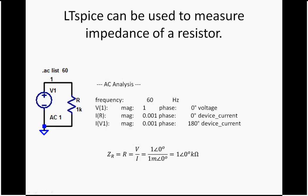We can use LTSpice to measure the impedance of the resistor, even though it should just be the resistor. So at 60 hertz, this is a way to run a simulation just at a particular frequency. AC list 60. 60 hertz being a common frequency.